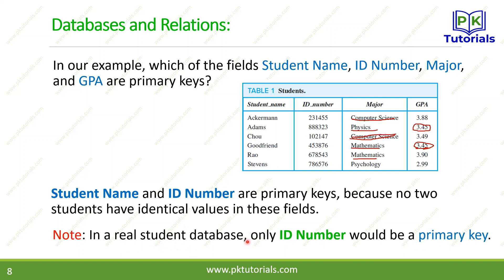In a real student database, only the ID number would be a primary key. With student names, repetition is possible — for example, there could be two students named Adam or Ali in one class. The student ID or student number is a unique digit assigned so there is no repetition, so in practice the ID number is normally the primary key.